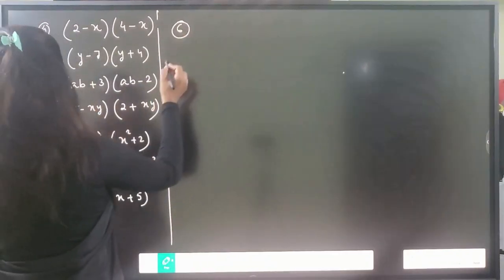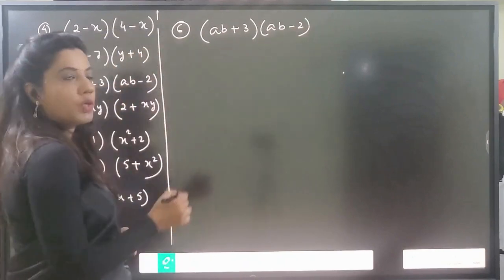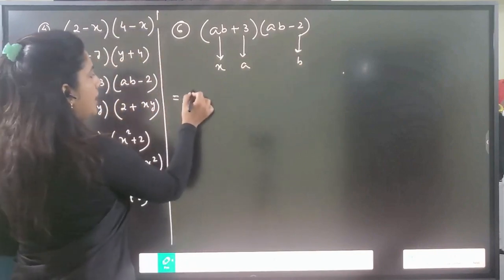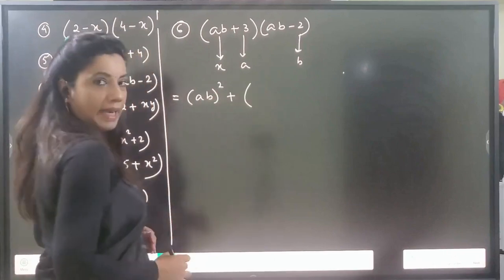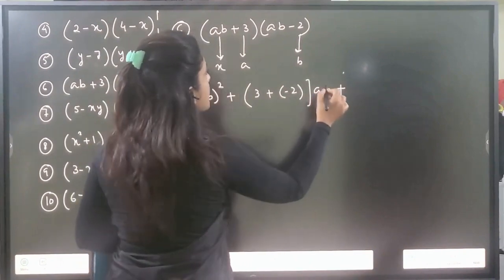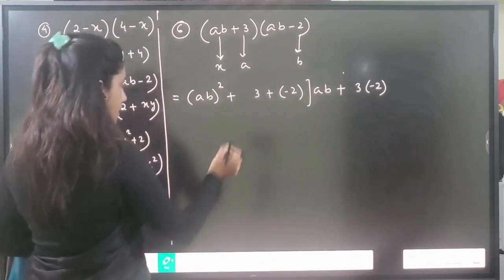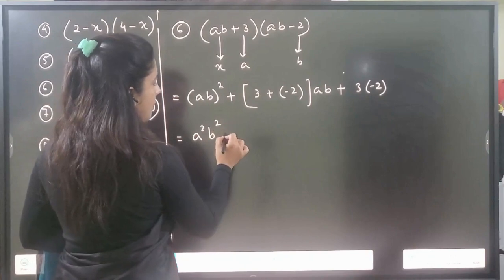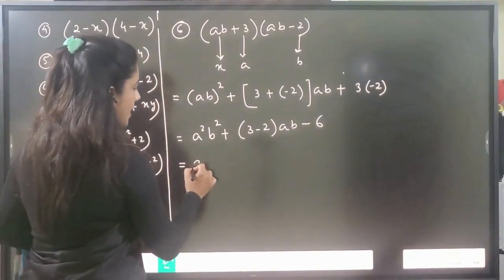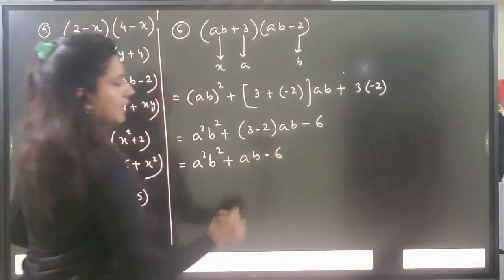Question number 6: (ab + 3)(ab - 2). Here x is ab, a is 3, and b is -2. Using the formula: (ab)² + (3 + (-2))(ab) + (3 × (-2)) = a²b² + 1·ab - 6 = a²b² + ab - 6. This is the answer.